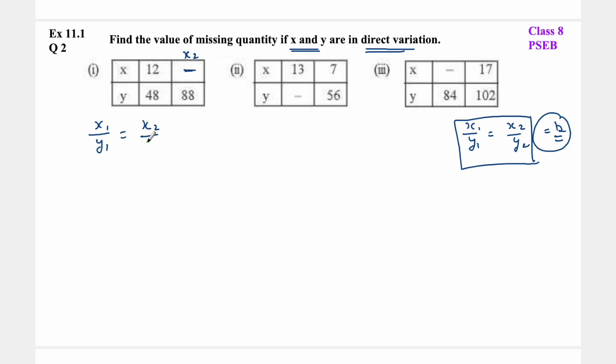For part (i), we need to find this missing value. Let's assume it's x2. So x1 upon y1 equals x2 upon y2. Here x1 is 12, y1 is 48, and y2 is 88. We'll cross multiply: 12 into 88 equals x2 into 48. So x2 equals 12 into 88 upon 48.